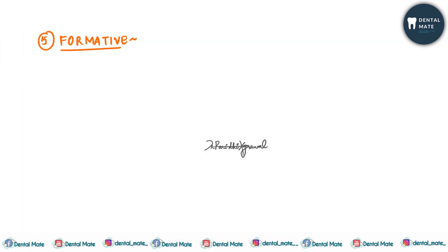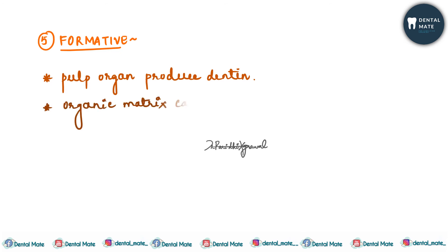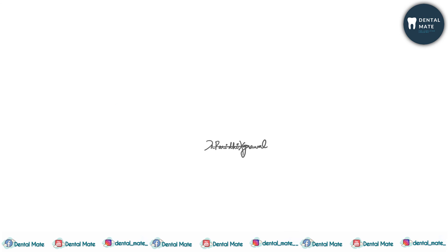The formative function: the pulp organ cells produce dentine. Pulpal odontoblasts develop the organic matrix and participate in its calcification. Through the odontoblastic processes, dentine is formed along the tubule wall and at the pulp-predentine junction.